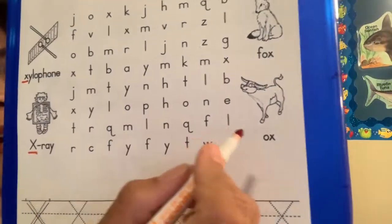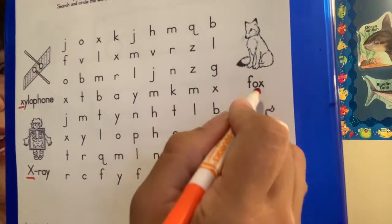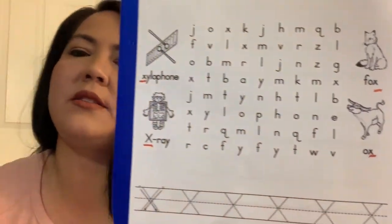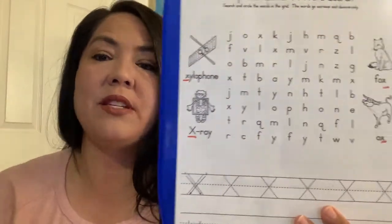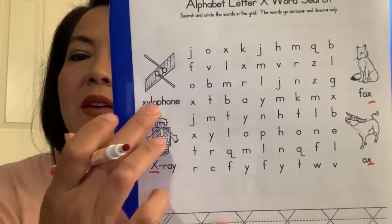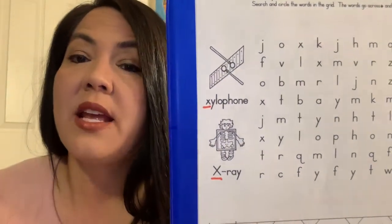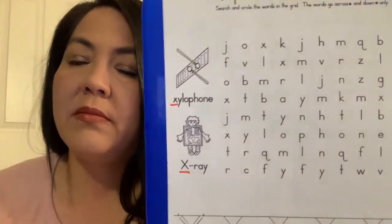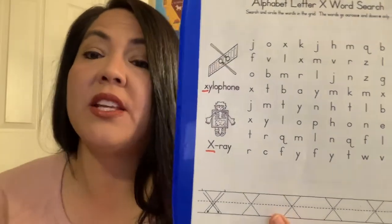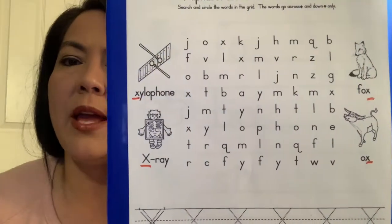Now these words over here, they end in X. Do you see that? There's an X at the very end. We have fox and ox. Do you hear that sound? And then we have x-ray and we have xylophone. Now normally when the word starts with an X, it has the Z sound — it makes the Z sound for Zeke the zebra. I know that's a little confusing, but we're just going to practice a little bit.